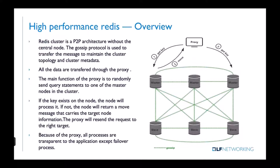The green dotted line represents the gossip protocol, used to transfer messages to maintain cluster topology and cluster metadata. All data is transferred through a proxy to read or write. When UPF-PFCP needs to write data into the Redis cluster, it first communicates with the proxy, which randomly sends the query to one of the master nodes. If the master node stores the key-value, it returns the value; if not, the node returns a MOVE message carrying the target node information, and the proxy resends the request to the target.